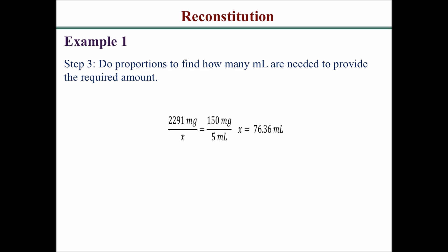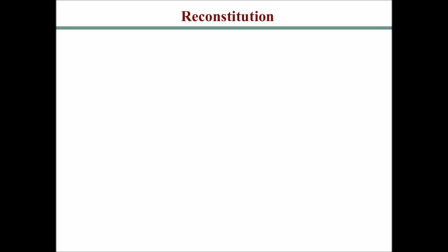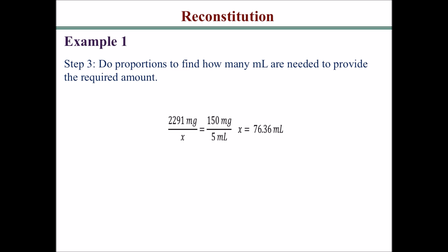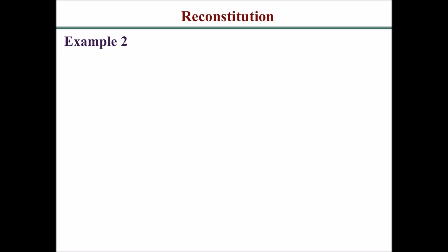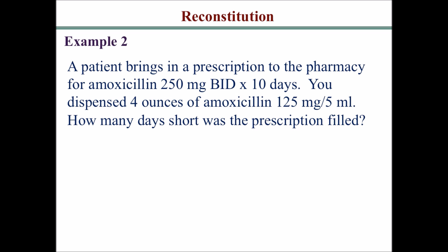After that, use proportions to find out how many ml are needed to provide the required amount. The concentration is 150 milligrams per 5 ml — you want to find how many ml would contain 2,291 milligrams. You'd get 76.36 milliliters.